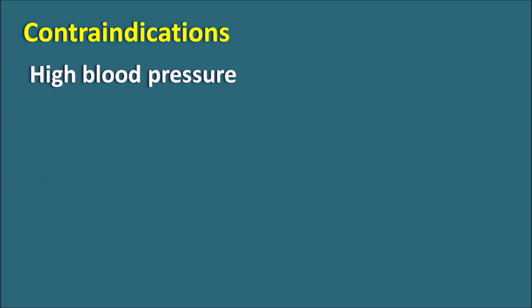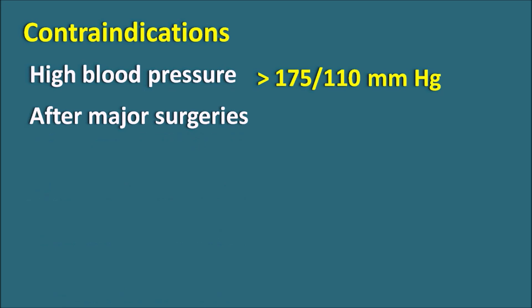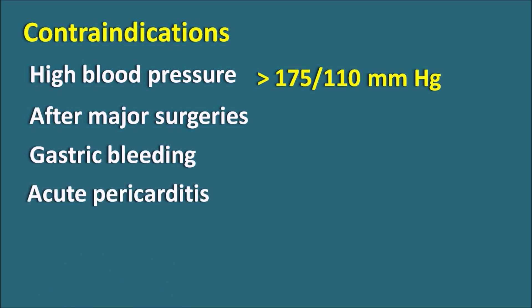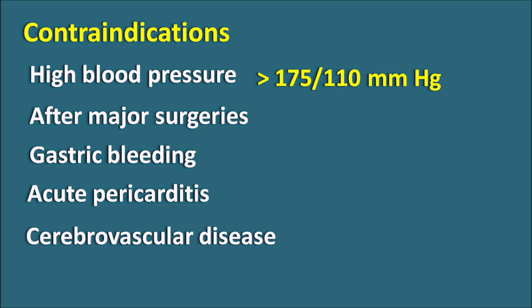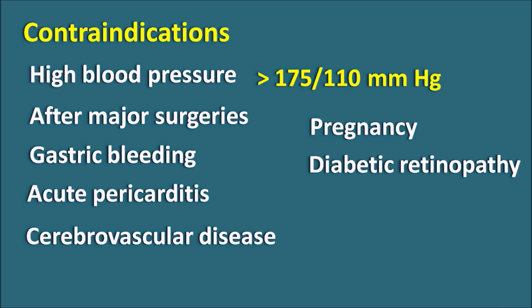What are the contraindications? Since fibrinolytics produce hemorrhage as an important side effect, any condition with an increased risk of hemorrhage is a contraindication. For example, in high blood pressure — when the patient has a blood pressure greater than 175/110 mmHg — these drugs are not preferred due to the increased risk of hemorrhage. Similarly, after major surgeries like coronary bypass graft surgery, these drugs are avoided due to increased bleeding risk. If any patient has recent gastric bleeding, acute pericarditis, or cerebrovascular disease, these drugs are contraindicated. Pregnancy is also a strict contraindication. Patients with diabetic retinopathy with increased hemorrhage risk, or elderly patients greater than 75 years of age, should not receive fibrinolytics.